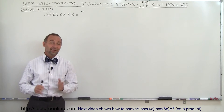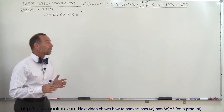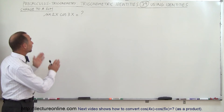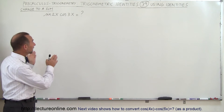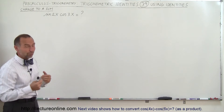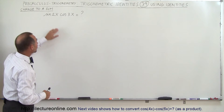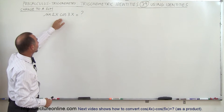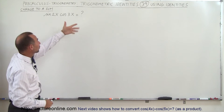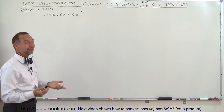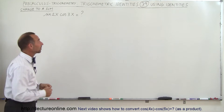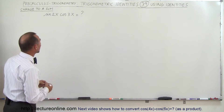Welcome to Electron Online. In our next example, we're going to try and turn a product into a sum. We're going to use an identity to change something in this structure into a sum or a difference of sines and cosines.